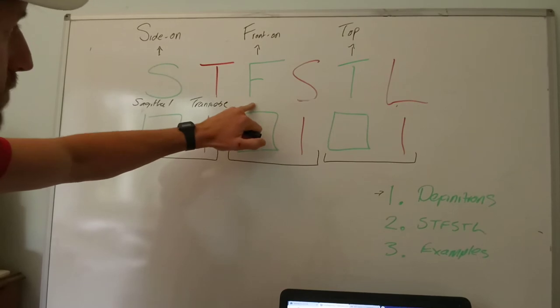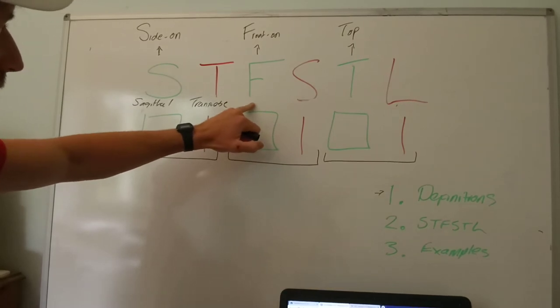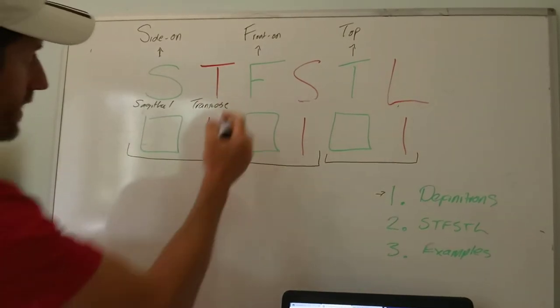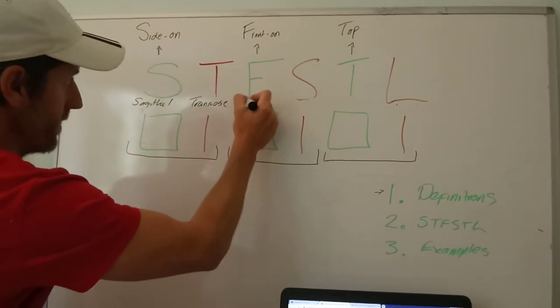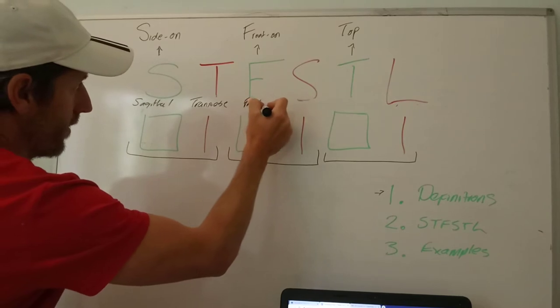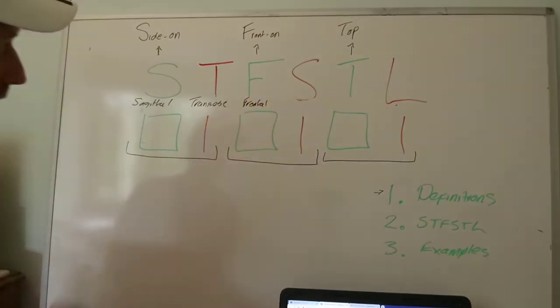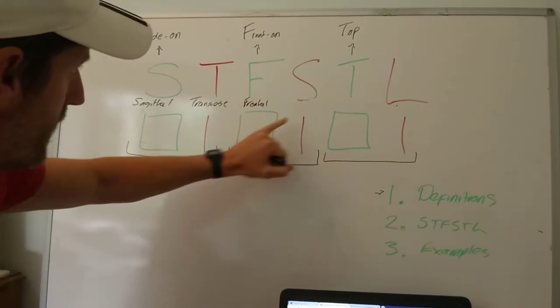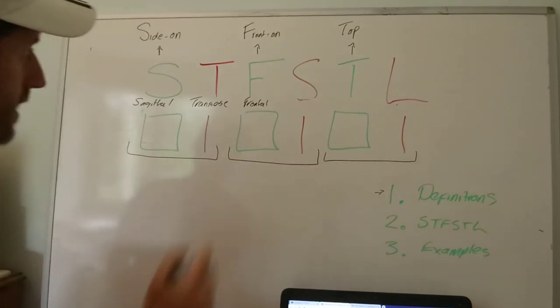The next plane is F for frontal — so that's a frontal plane. The green square is the plane and the red line is the axis.